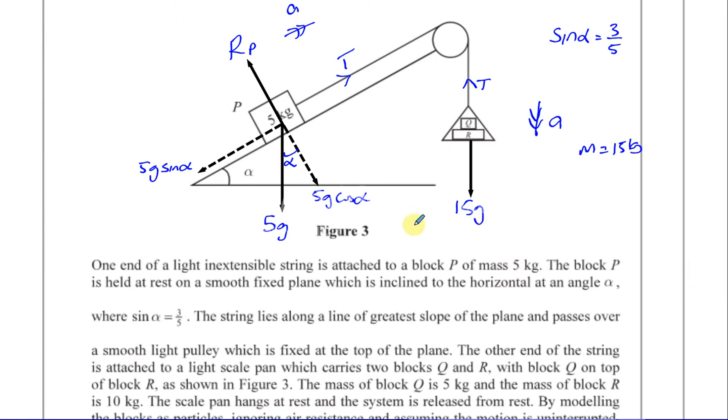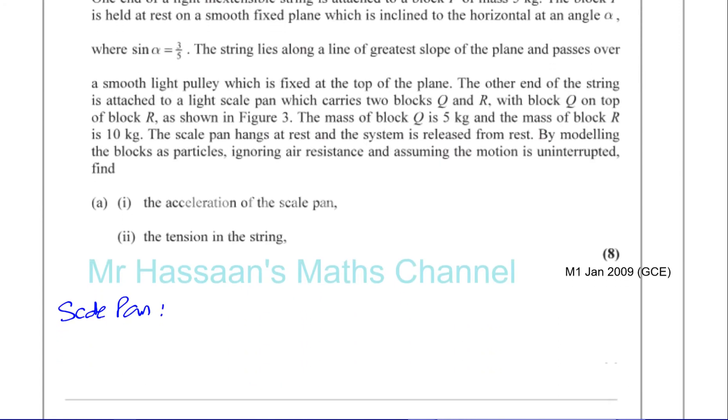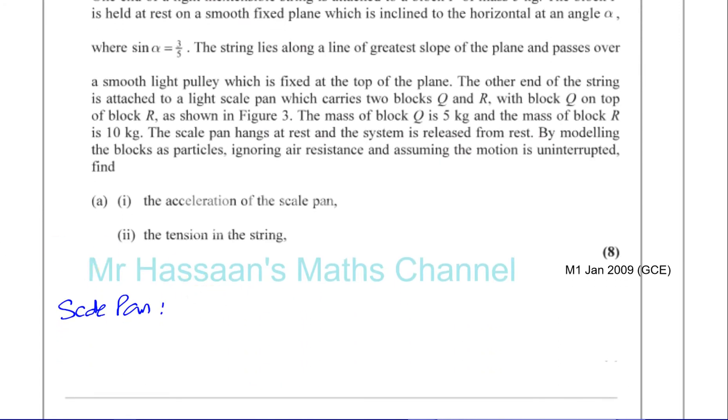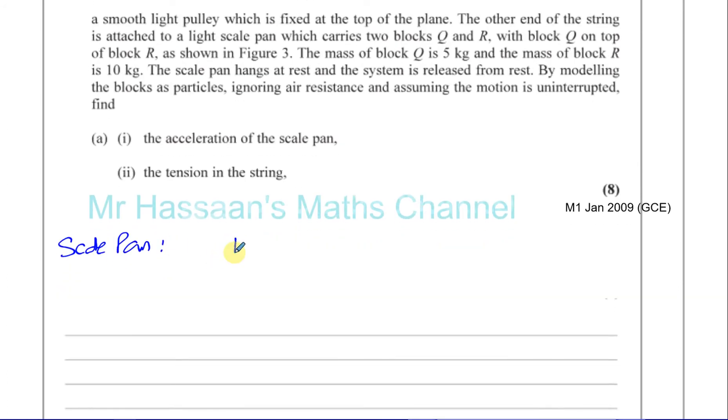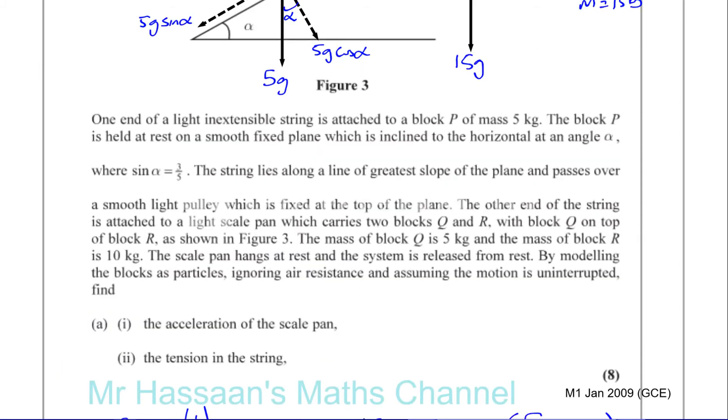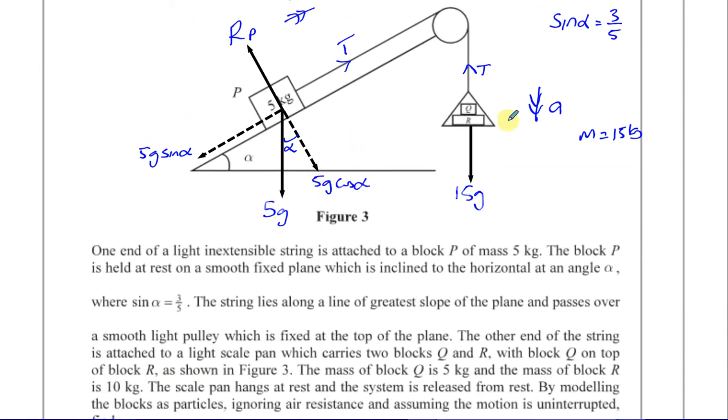So 15g minus T equals 15ma because the mass is 15 kilograms altogether. That's from F equals ma, the resultant force equals ma.